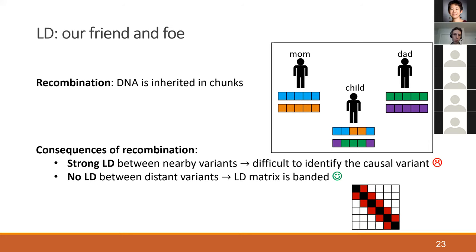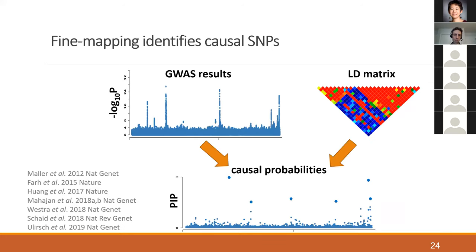The technique of finding these causal probabilities is called fine mapping. The idea is that we take GWAS results and a matrix of LD — the correlations between nearby SNPs — and combine these two things together in a probabilistic model to estimate the causal probabilities, the PIPs, that we care about.